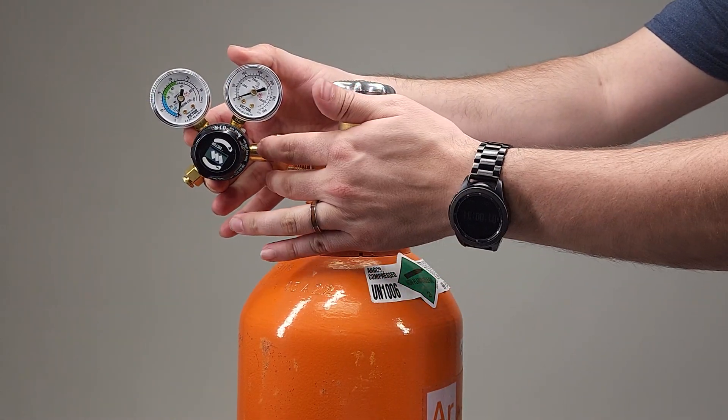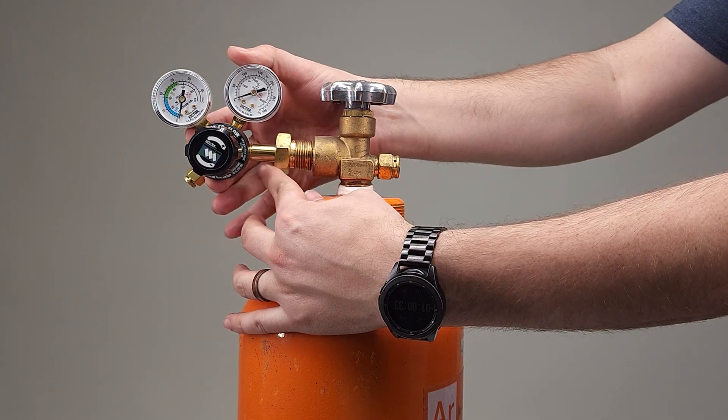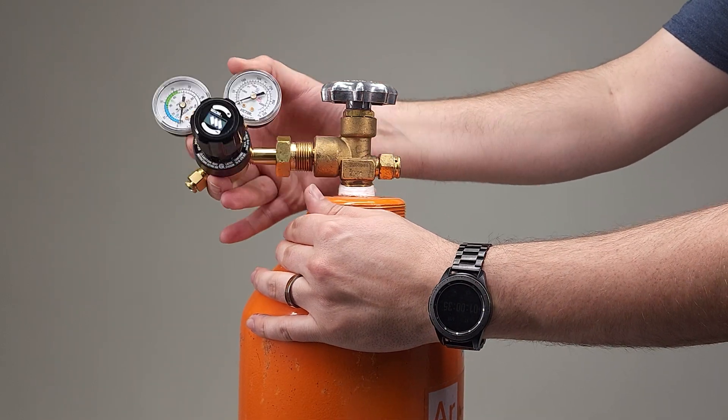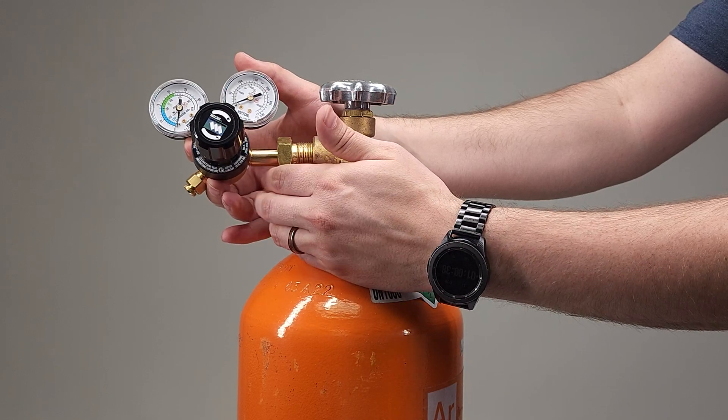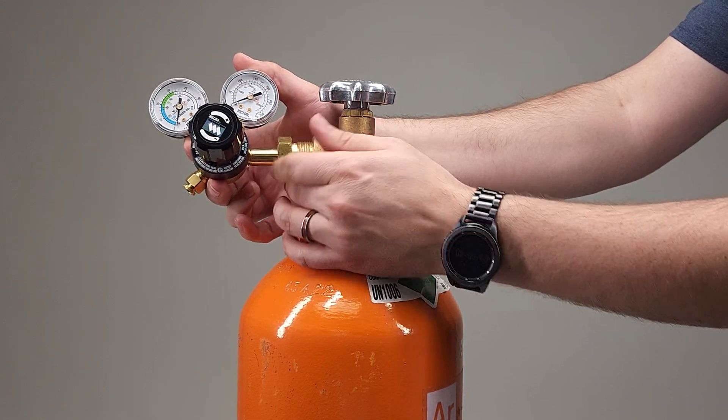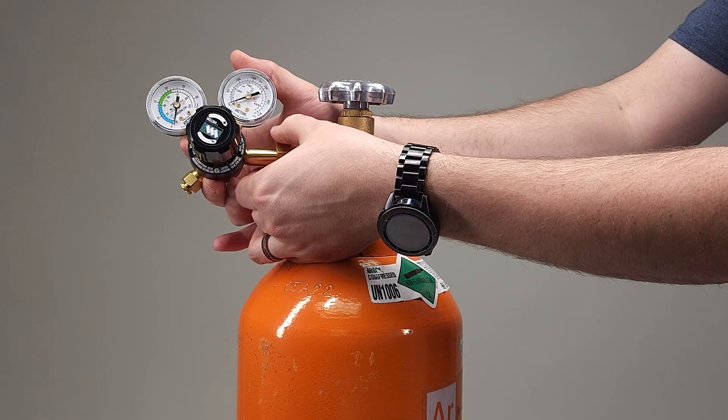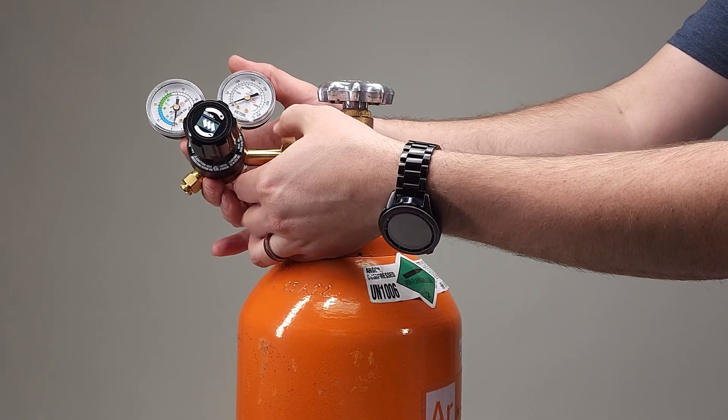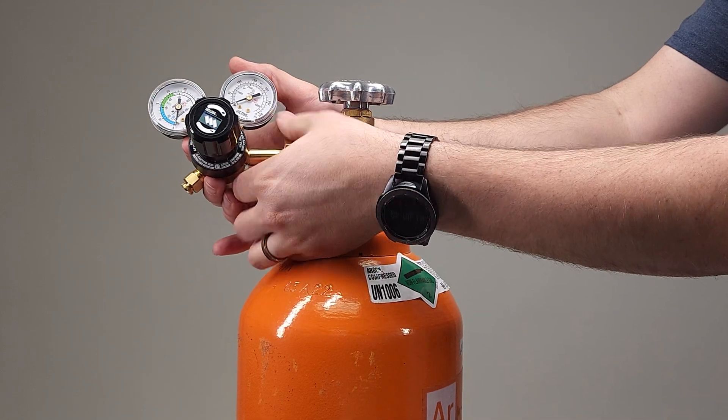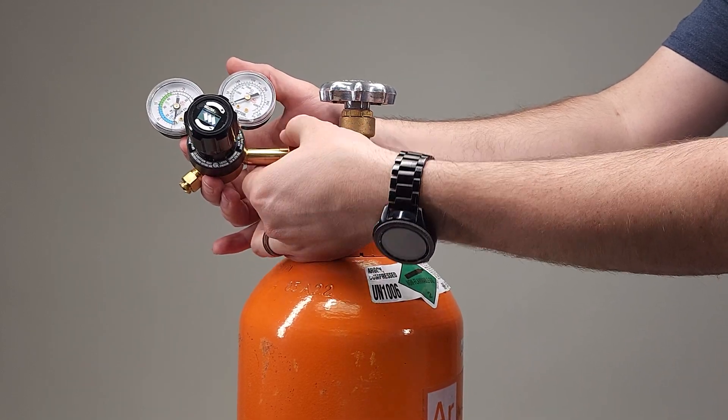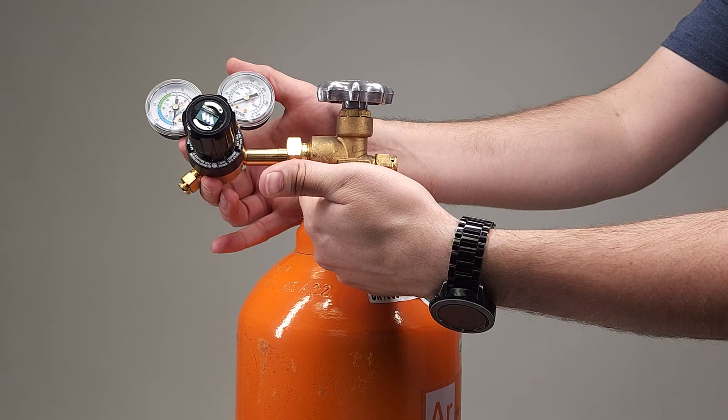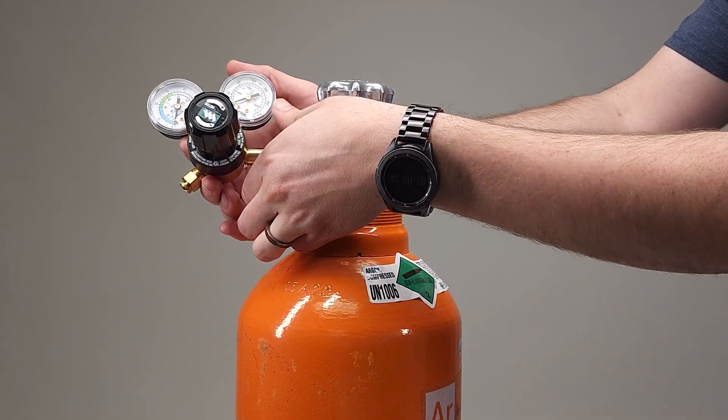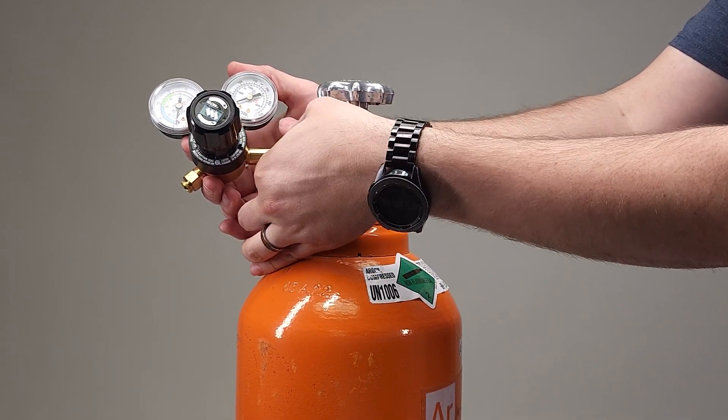As you can see this threaded bit moves freely and we can fit it into that receptacle on the argon tank and then we can just thread that on by hand. We'll just have to move it around just enough so we can get those threads started and then we can just keep on threading it on as far as we can by hand until we need to incorporate our wrench.